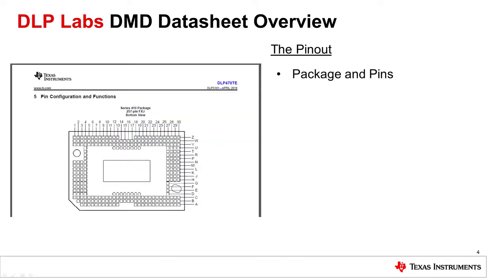Section 4 shows the revision history of the datasheet, while section 5 is the pin configuration and functions. The package and pins diagram shows the layout of the DMD package from the bottom side view. Each pin on the package has a coordinating letter and number designation, A30 being in the lower right corner of this example.